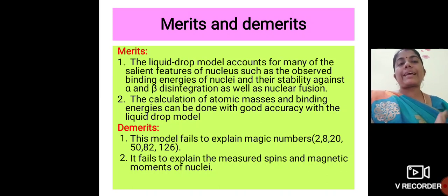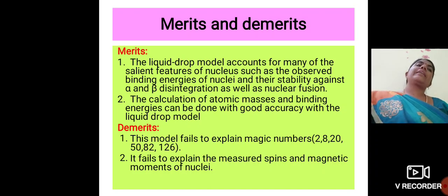What are the demerits? It fails to explain the magic numbers, that is the magic numbers 2, 8, 20, 50, 82, and 126. Also, it fails to explain the measured spins and magnetic moments of nuclei. These are the demerits of this liquid drop model, so the shell model came.